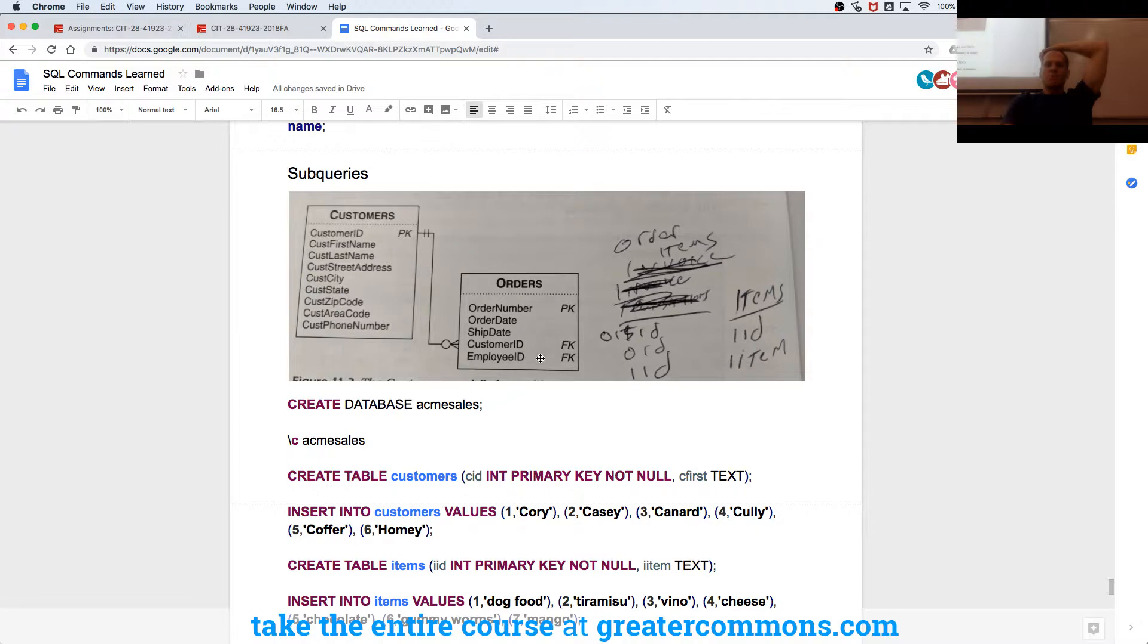One customer can place many orders, right? Each order can have many items on it. So each order can have many order items. And then we have a table, Items, of the items that can be ordered. So between Orders and Order Items, one order can have many order items. And one item can be associated with many order items.